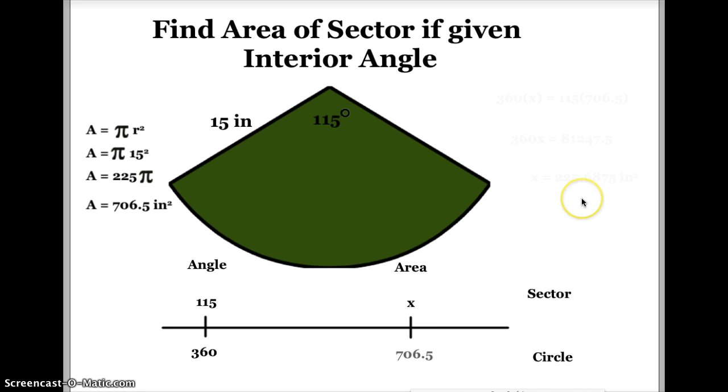So right down here, I'm going to put 706.5. Now when I cross multiply this, I'm going to take 360 and multiply it by x, and I'm going to set that equal to 115 times 706.5. So there's my first line in my cross multiplying.